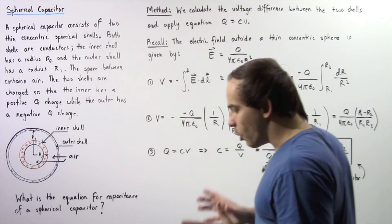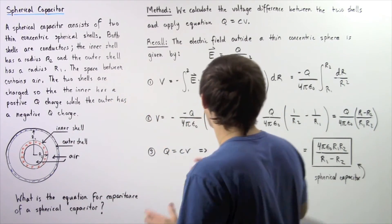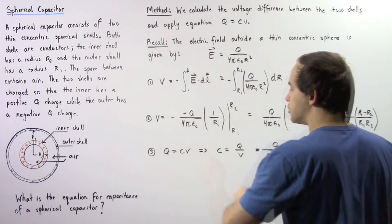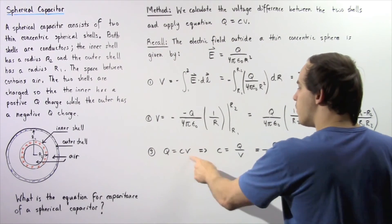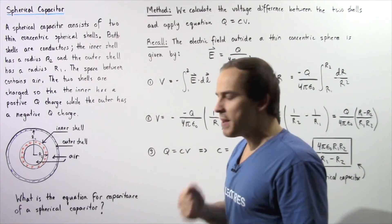Now we apply the equation Q equals C multiplied by V and solve for our capacitance. Our capacitance is equal to Q divided by V.